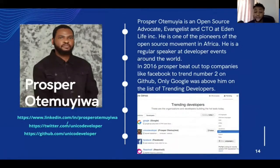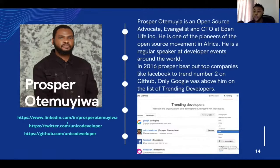Prosper Otemu Yuwa is an open source advocate, evangelist, and CTO of Eden Life Inc., from Nigeria. He's one of the pioneers of the open source movement in Africa and speaks regularly across the world. One major milestone: in 2016, Prosper beat out top companies like Facebook and Google to rank number two on GitHub for training developers in PHP — the only company that topped him was Google. He helps developers get started in open source.